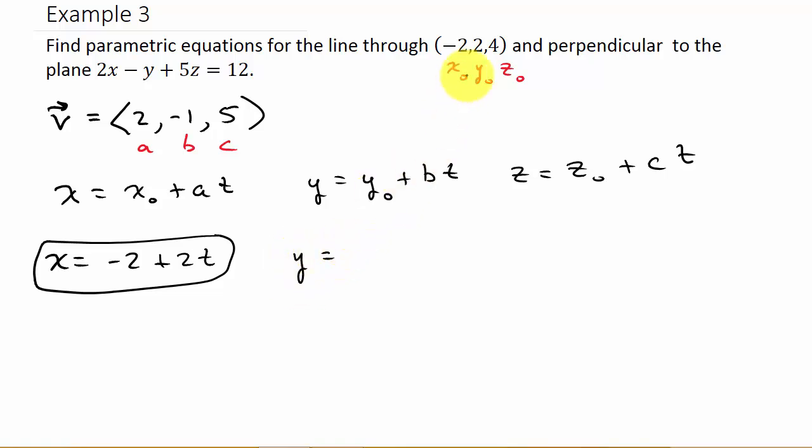y would be y₀, which is 2, plus b—see the b? b is -1, so y = 2 - t.